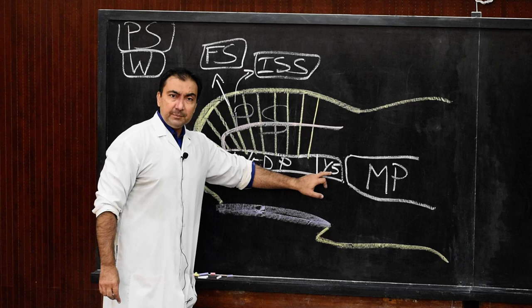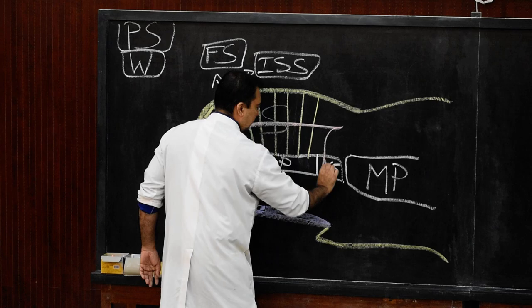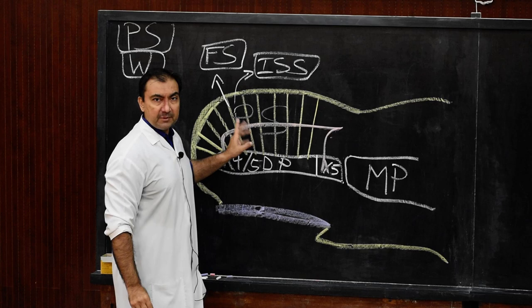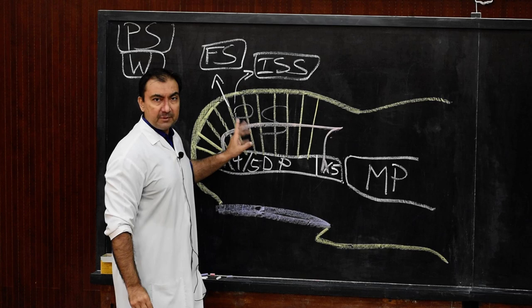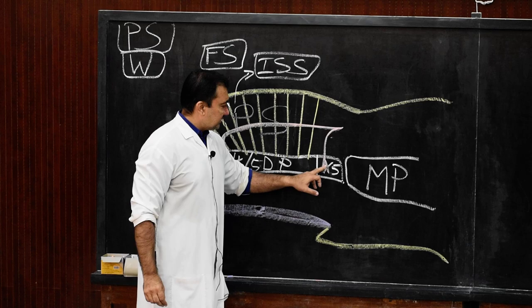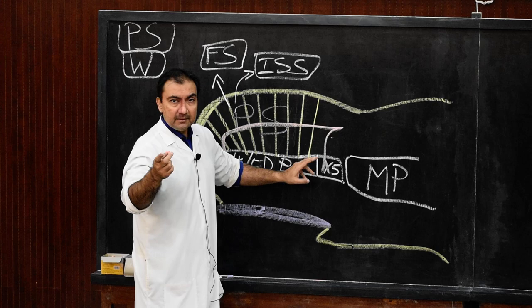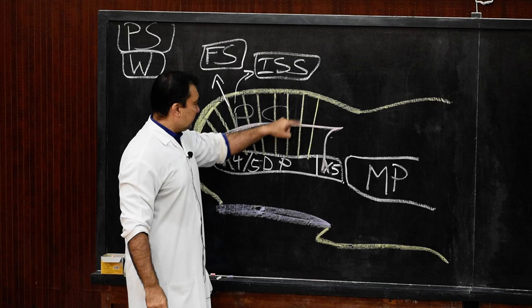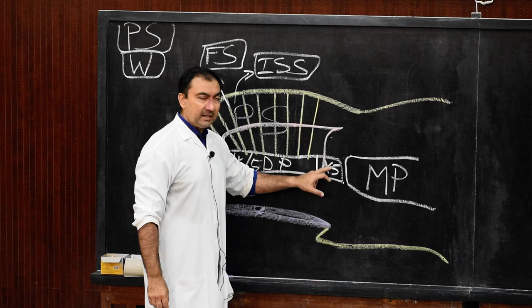The proximal one-fifth of the distal phalanx receives a separate blood supply. The artery supplying the proximal one-fifth does not pierce any of the fibrous septa and does not pass through any of the interceptal compartments.